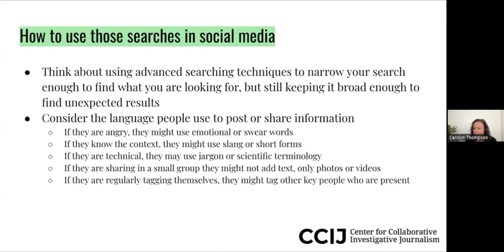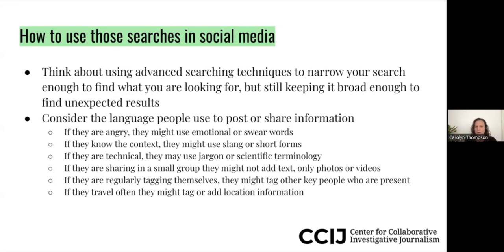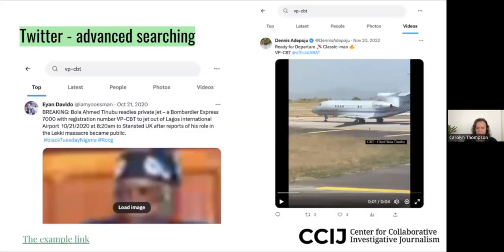If they're regularly tagging themselves, they might tag other important people as well. For example, a politician who's regularly appearing in public might also tag other people in those posts. And if they travel often, they might tag or add a location. So we're going to look at how all of those pieces can help us do better research and find more information to use in our investigations — either as leads or to confirm something. On Twitter, it has a normal search, and if I search this code, I can find all the posts that have those words in it.